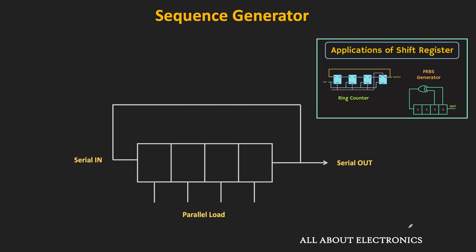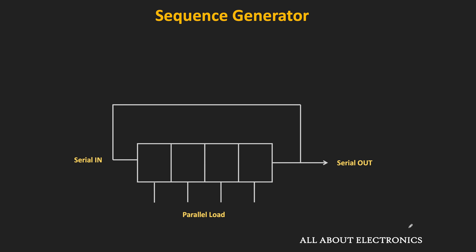In the earlier video of the shift register, we saw how it can be used as a sequence generator. We saw that if we want to generate an N-bit sequence generator, then we require an N-bit shift register. Whatever sequence we want to generate, we need to load it inside the shift register. For example, if we want to generate the sequence 1011 continuously, then we require a 4-bit shift register with parallel load capacity. But in this method, the number of required flip-flops is equal to the length of the sequence. For example, if we want to generate a 16-bit sequence, we will require 16 flip-flops.